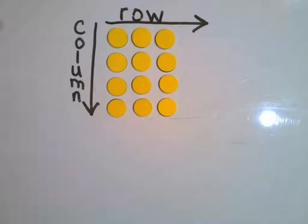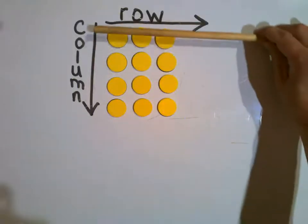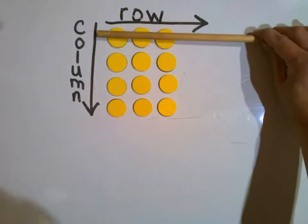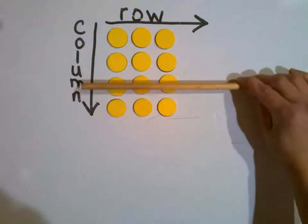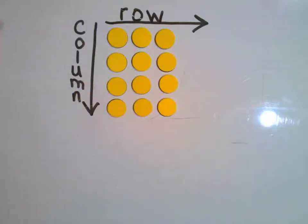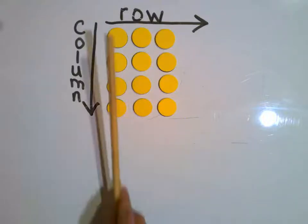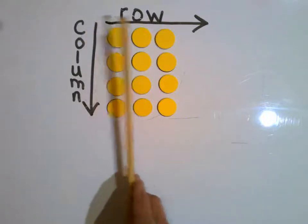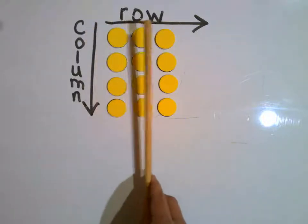Okay boys and girls, now we're back. Notice how I have a different arrangement here — I have a different array. So let's take a look. Let's see how many rows we have first: one, two, three, four. Versus let's see how many columns I have: one, two, three. So now that's going to change how many times I'm going to repeatedly add that same number.